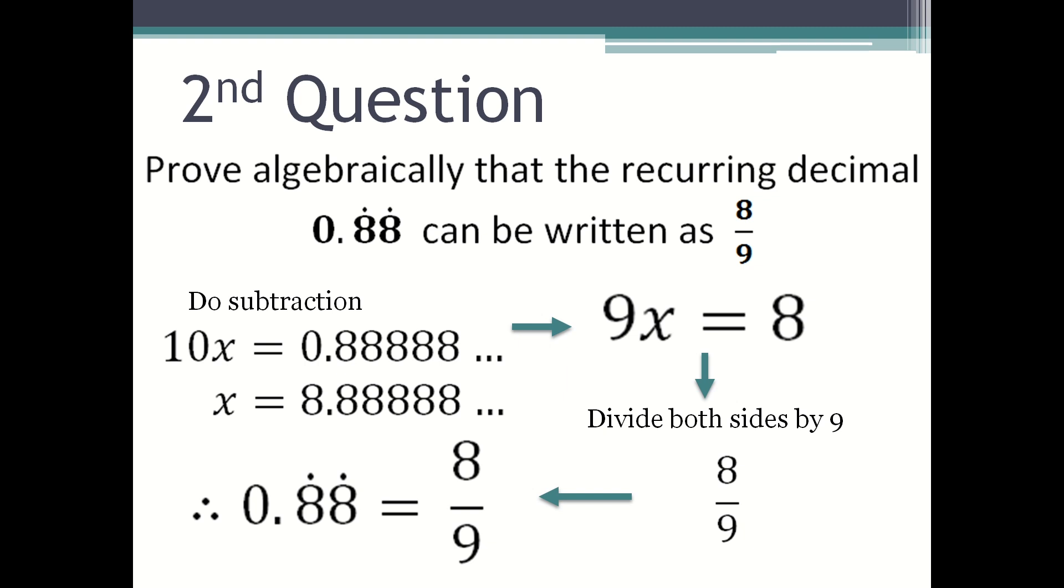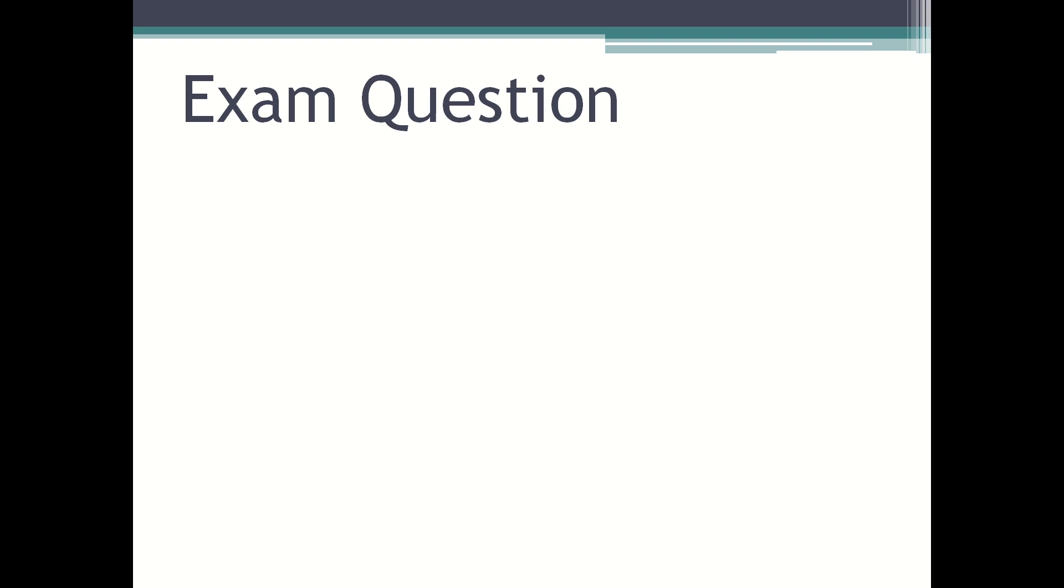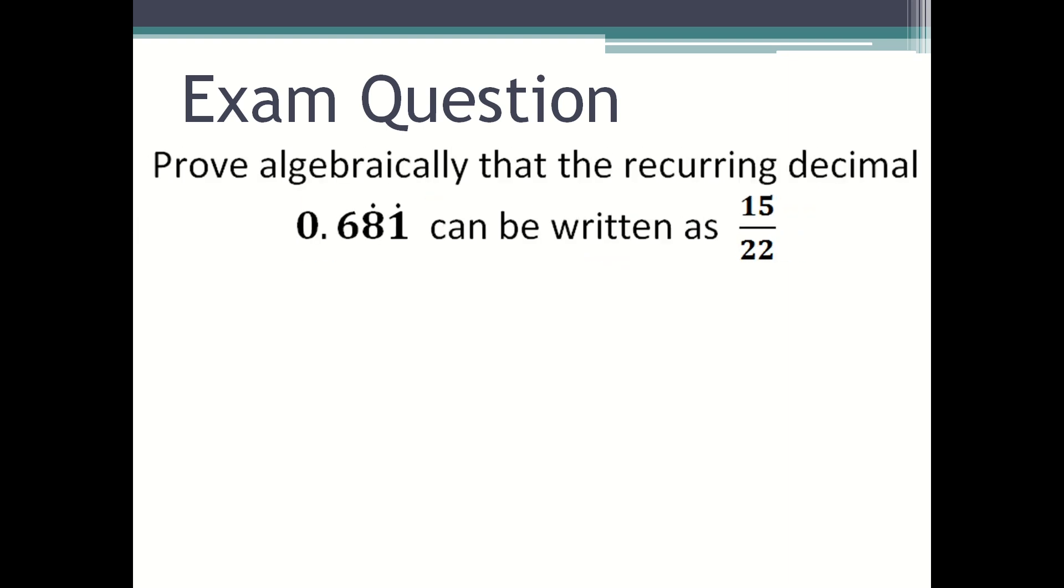Now we're going to look at an exam question. Prove algebraically that the recurring decimal 0.681 recurring can be written as 15 over 22.